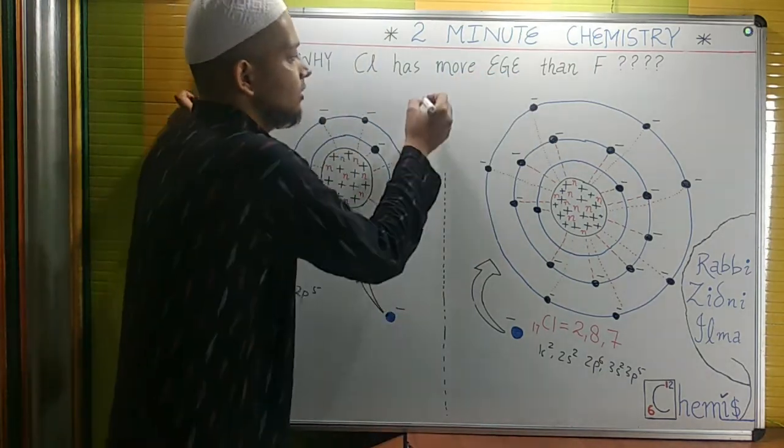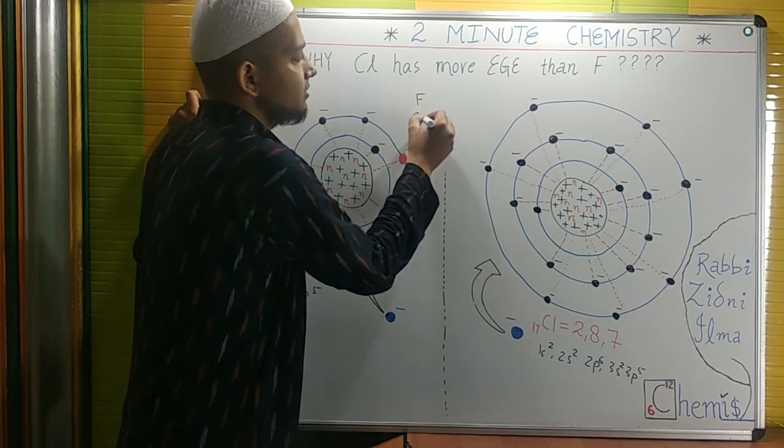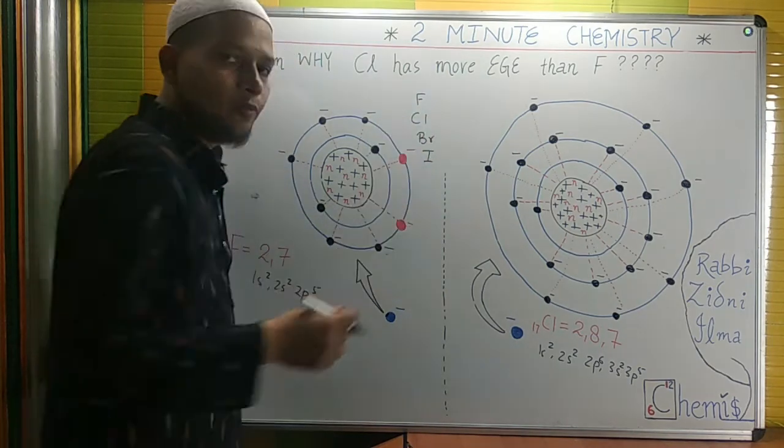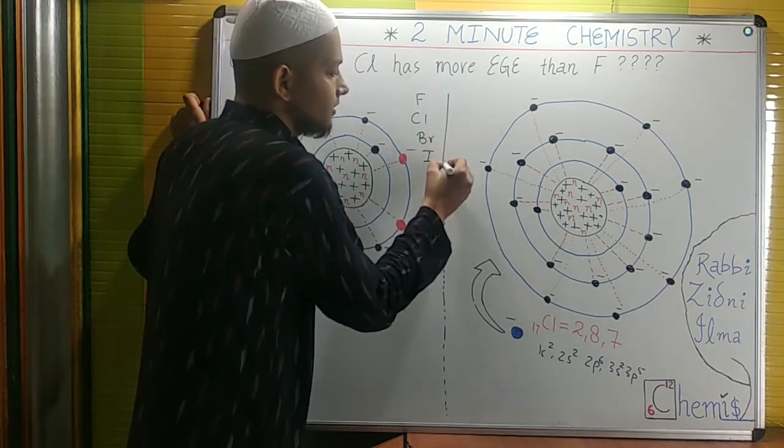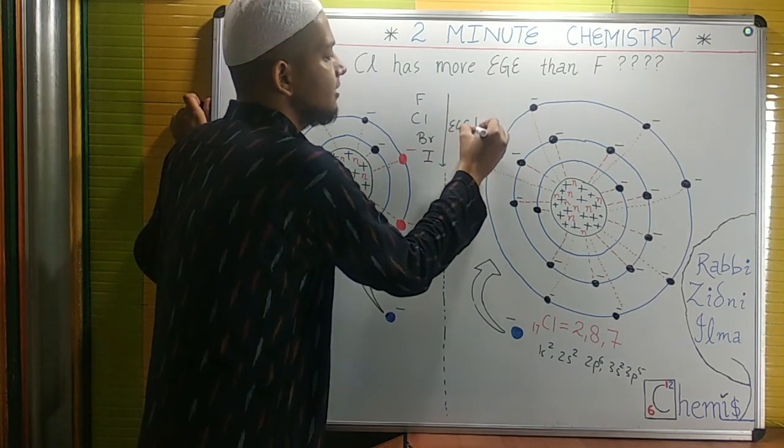As we know, the halogen family has the respective members fluorine, chlorine, bromine, and iodine. While moving down the group, we observe that electron gain enthalpy smoothly decreases.